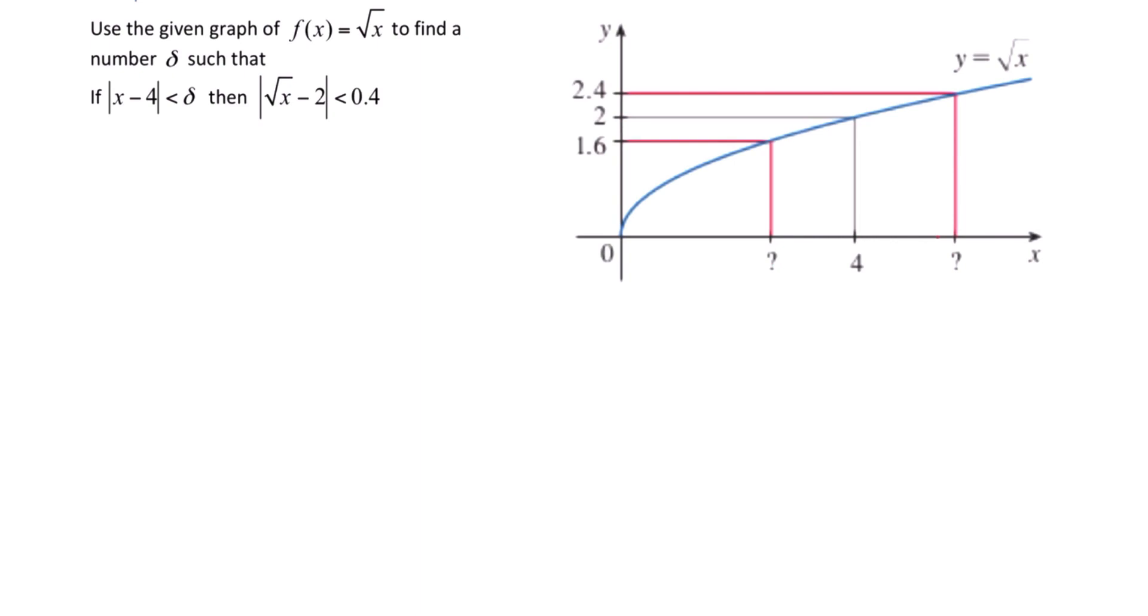In this example, we're given the function the square root of x, and we're looking for delta. Remember that delta is this region around, in this case, 4. And we have two of them, so we'll call them delta 1 and delta 2. And we want to know which of those is the smallest, and that's what we'll go with for delta.